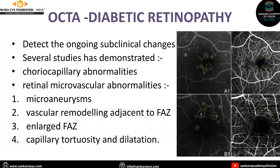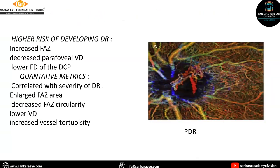In diabetic retinopathy, OCTA detects ongoing subclinical changes. Studies show that there can be choriocapillary abnormalities, retinal microvascular abnormalities such as microaneurysms, vascular remodeling adjacent to the FAZ, enlarged FAZ, capillary tortuosity and dilatation. Higher risk of developing diabetic retinopathy can be indicated by increased foveal avascular zone, decreased parafoveal vessel density, and lower foveal density of the deep capillary plexus. Quantitative metrics correlated with severity include enlarged FAZ area, decreased FAZ circularity, lower foveal density, and increased foveal tortuosity.